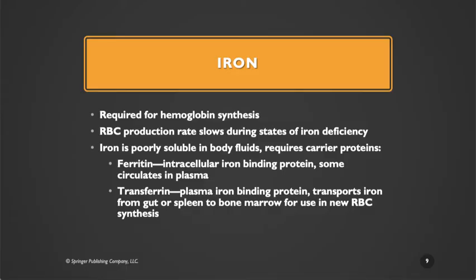Remember, iron is required for hemoglobin synthesis. It is poorly soluble in the body fluids, so it needs a carrier protein. Transferrin is the carrier protein that moves iron from the gut if it's iron being taken from the diet, or from the spleen if it is being recycled from other red blood cells. Those sources of iron then go to the bone marrow to produce new red blood cells.